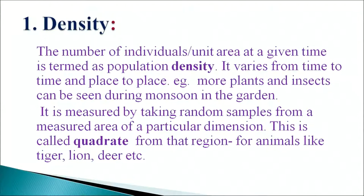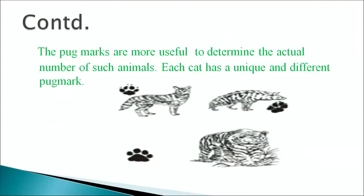Coming to density. The number of individuals per unit area at a given time is termed population density. It varies from time to time and place to place — for example, more plants and insects can be seen during monsoon in the garden. It is measured by taking random samples from a measured area of a particular dimension, called a quadrat. For animals like tiger, lion and deer, pug marks are more useful to determine actual numbers, as each cat has unique and different pug marks. For human populations, a method called census is carried out every 10 years where each individual is physically counted.